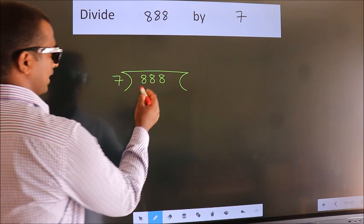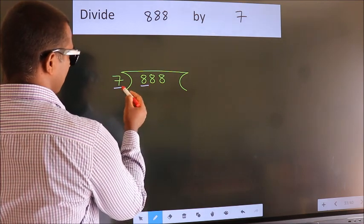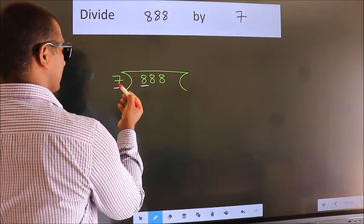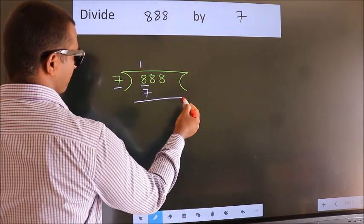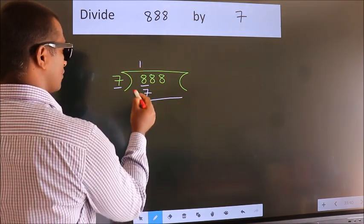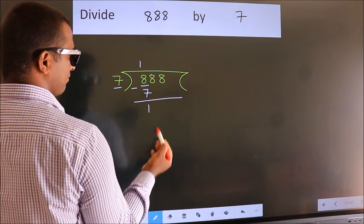Here we have 8, here 7. A number close to 8 in 7 table is 7 once 7. Now we should subtract. We get 1.